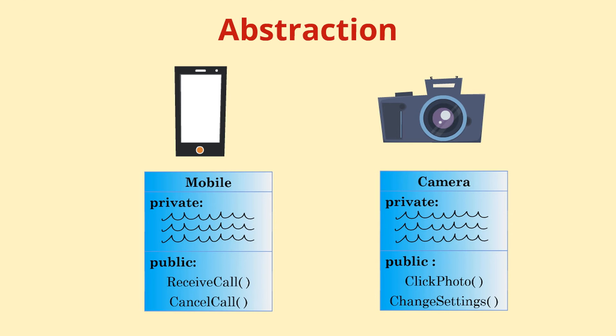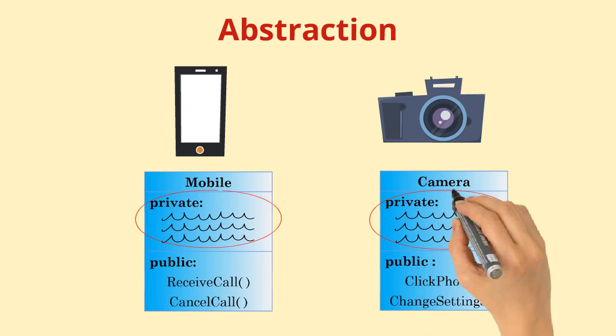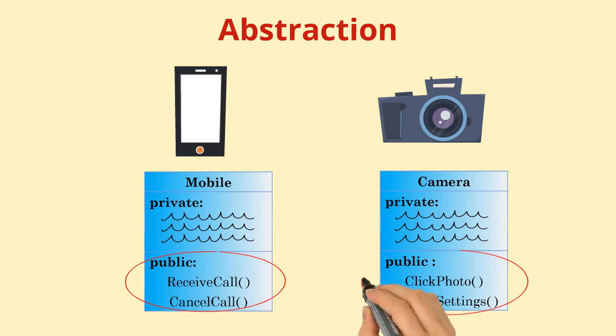Similarly, abstraction is the property by virtue of which you hide the complexity or the working inside an object and only the essential details are exposed to the user. The trivial or the non-essential units are not displayed to the user.